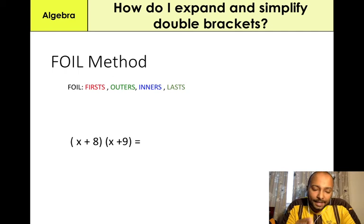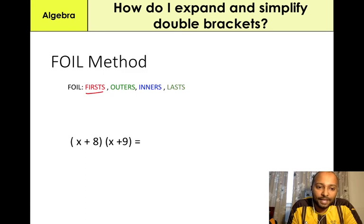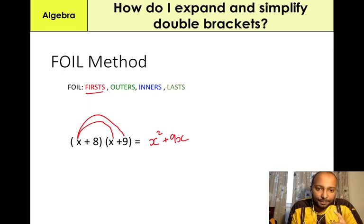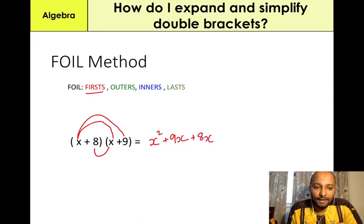Second example, again using the FOIL method. First, multiply the X in the first bracket with the X in the second bracket — X times X gives us X squared. The Outer is X multiplied by the last number in the second bracket, which is X times 9, which is 9X. Inner is the two numbers and variables multiplied together: 8 times X, which gives us 8X.